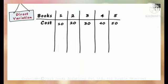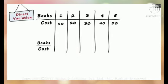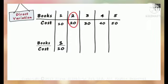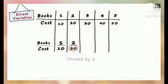Now let us form a new row to write the ratio of number of books to the total cost. We will find this ratio for each of the five cases — the ratios we get will be very interesting. In the first case, the number of books is 1 and the cost is 10, so the ratio is 1/10. In the second case, the number of books is 2 and cost is 20, so the ratio is 2/20. Look at these two ratios carefully — they are the same.